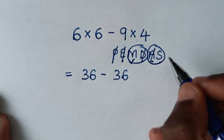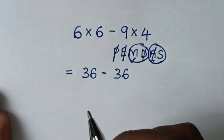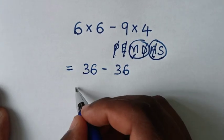Now we'll do this group here. We don't have addition, we have subtraction. 36 minus 36, which is equal to 0. Therefore, our final answer is equal to 0.